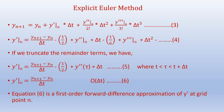Here τ lies between t and t + Δt. We can write the simplified equation as y'_n ≈ (y_{n+1} − y_n)/Δt, which is of order Δt. This is the first-order forward difference approximation of y' at grid point n.